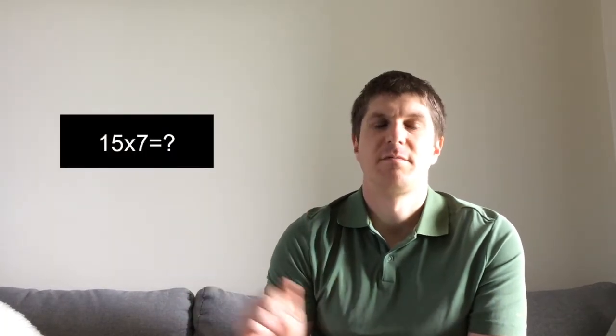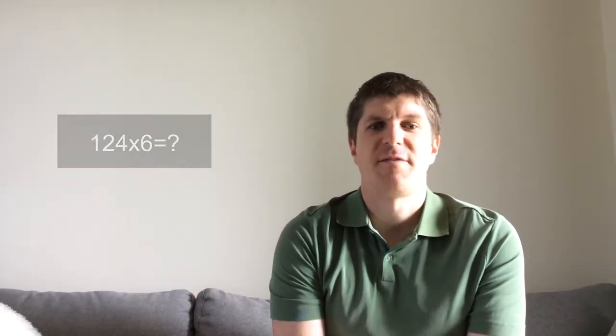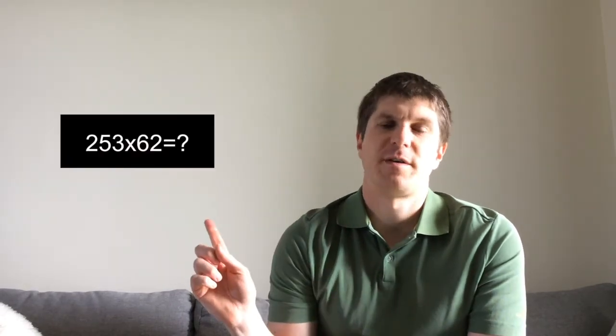Hi there. Welcome to this math strategy video. We're going to show you how to solve different problems. Today, we're going to look at multiplying using place value. We're going to try three problems: 15 times 7, 124 times 6, and if you're really brave, 253 times 62. We'll use place value cubes to do this. Let's get started.